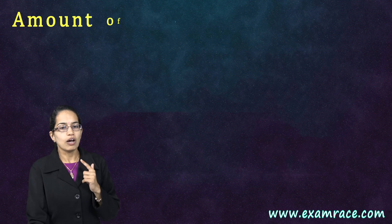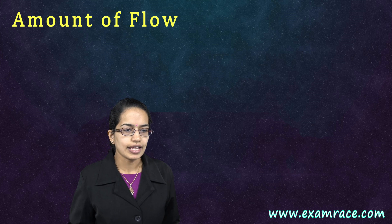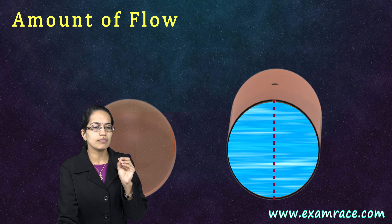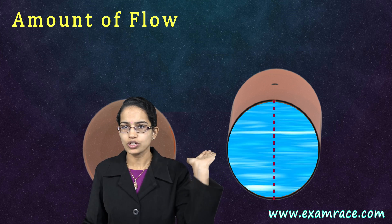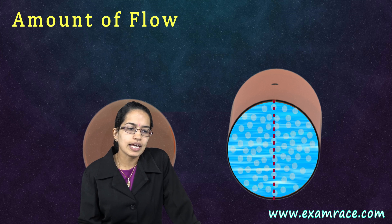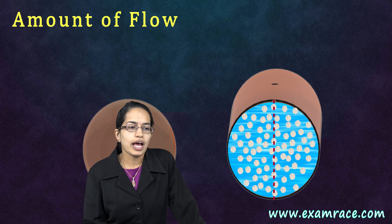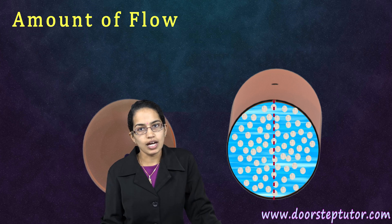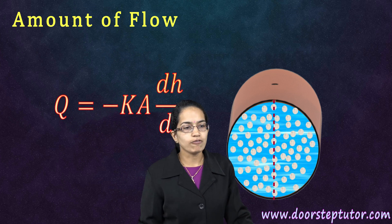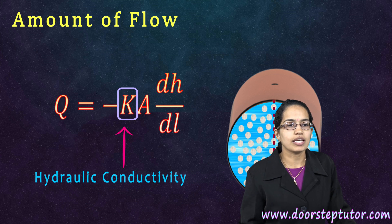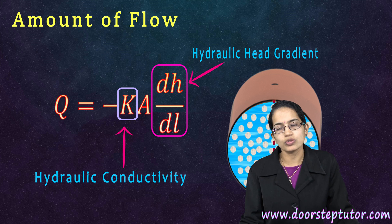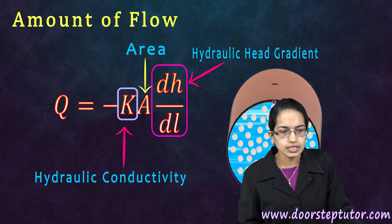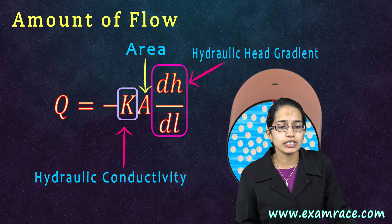When talking about amount of flow, consider the sand tank with a certain diameter. If it were an open clear channel, a huge amount of water would flow. But with intermittent sand particles, the effective area changes, affecting the amount of flow. The amount of flow is determined by a formula focusing on hydraulic conductivity, the hydraulic head gradient, and the area — taking into account the diameter of the channel through which the water passes.